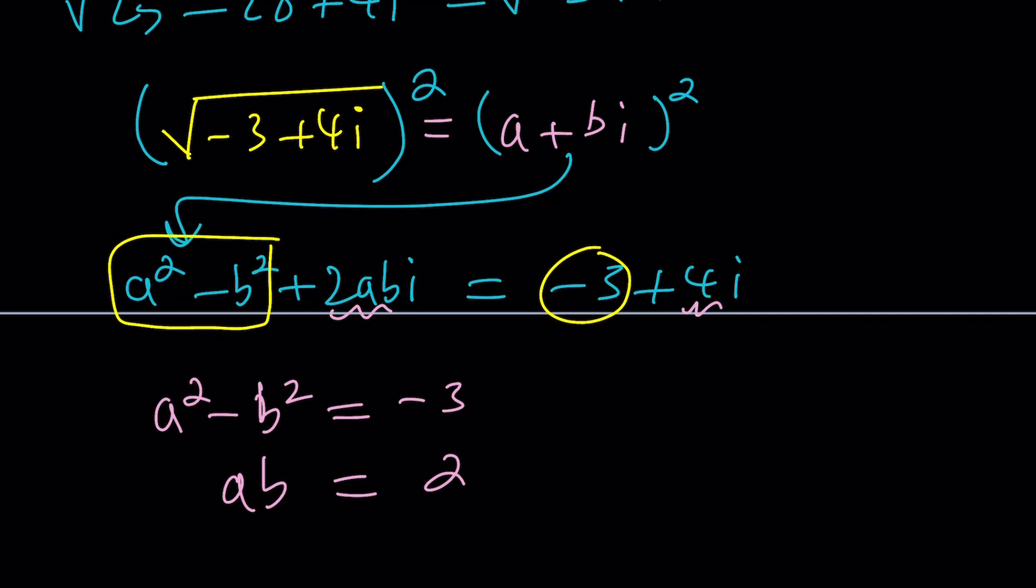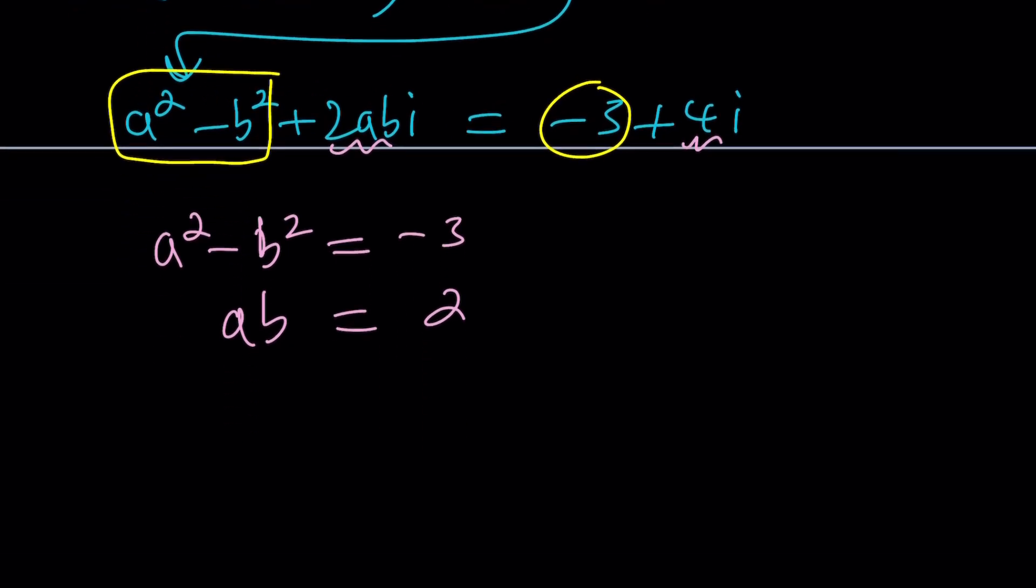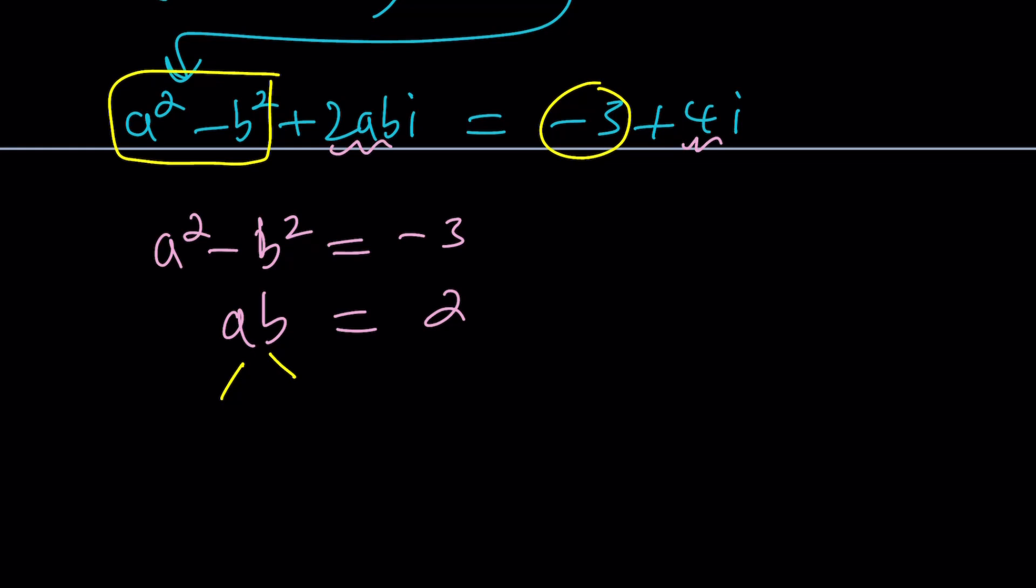But there's an easier way to do it. We're looking for good solutions, solutions that are integers. So try to find two numbers whose product is 2. And, of course, the difference of their squares is supposed to be negative 3. Since A needs to be less than B, because their difference is negative. I'm going to pick A equals 1 and B equals 2.